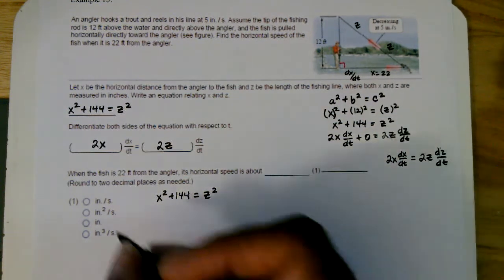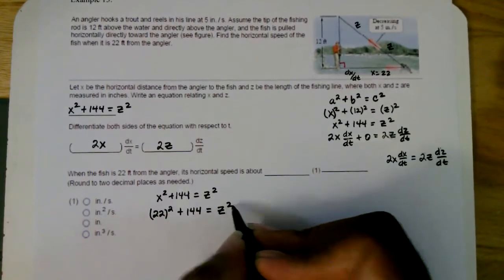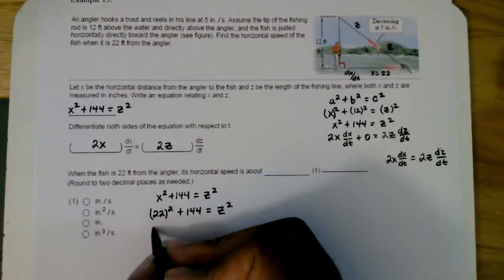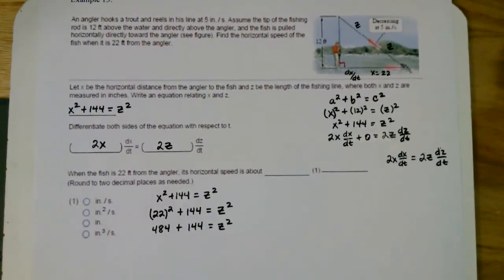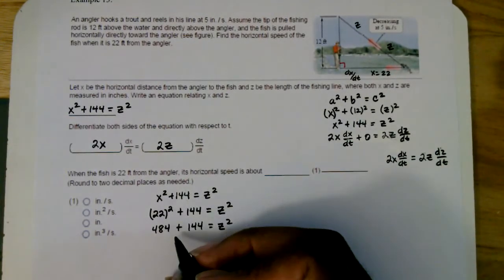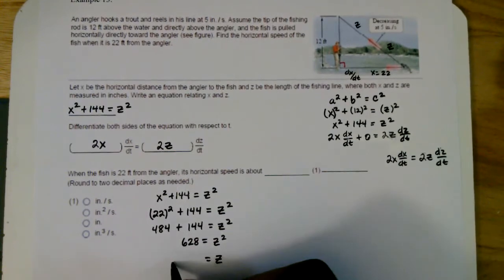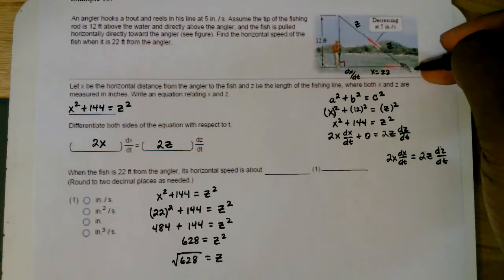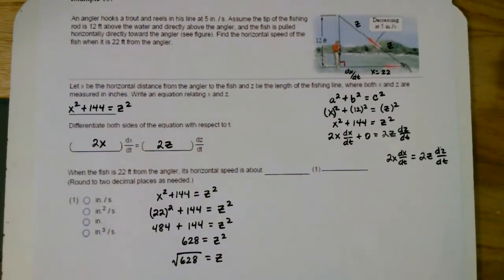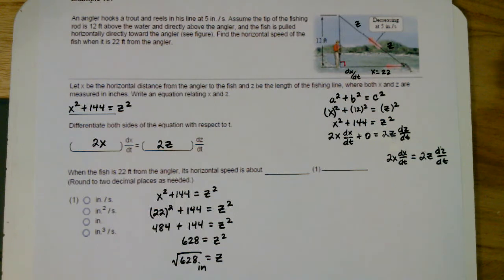And I know x is 22 feet. So that's 22 squared, plus 144 is equal to z². 22 squared is 22 times 22. That's 484. Add 144 to the 484, you'll get 628. And that's equal to z². And to find z, I'll leave this as the square root of 628. So z, that's the distance from the fish to the tip of that fishing rod, is going to be √628. And that is in inches, by the way.